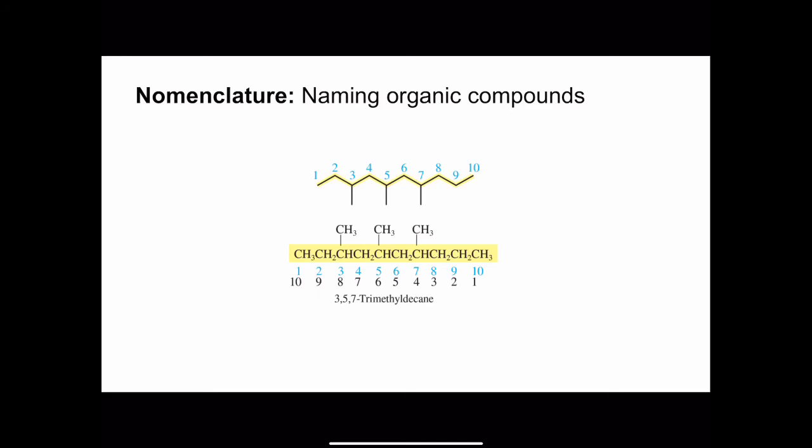Another big part of Chapter 10 is nomenclature, which is naming organic compounds. I have one example shown here of an organic compound with its name. The reason naming organic compounds is so important is so that organic chemists and scientists in general can communicate with each other all around the world. If we have a standard naming system, one scientist in one country can talk about this molecule, 3,5,7-trimethyldecane, and relate that structure to another scientist just by using a name. We're going to talk a lot about nomenclature.